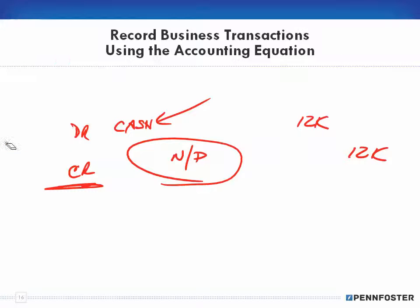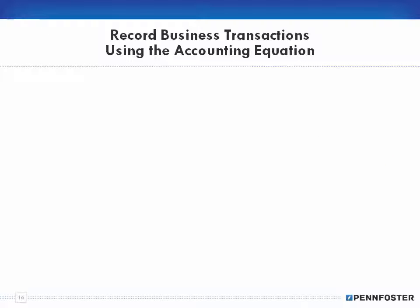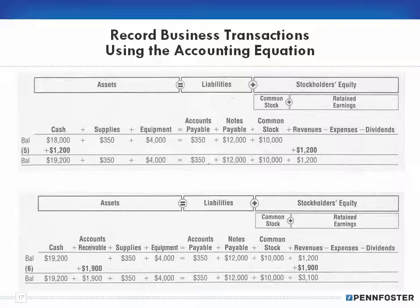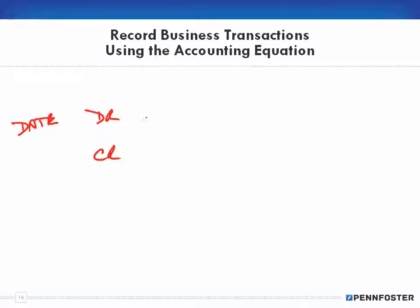We're going to make a sale for $1,200. When making the journal entry, we have our date, a debit and a credit. The first question I ask myself is: am I affecting cash? If I sold something for cash, that means I'm receiving cash and my cash is increasing. Cash is an asset, and when I increase an asset I increase it on the debit side. So I'm going to be debiting my cash.